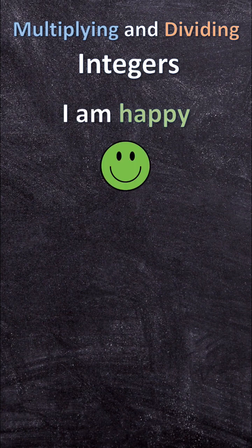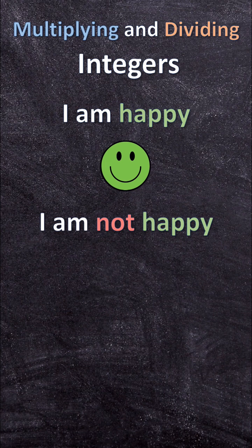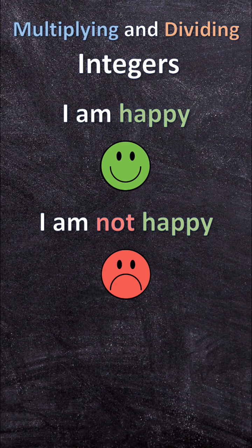But when I take this positive sentence and I add a negative, I am not happy. That means I am sad. So a negative and a positive makes a negative.